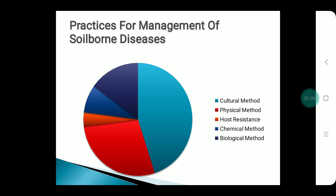The pie chart for the management practice of soil-borne disease shows that the highest proportion — 45% — is the cultural method, followed by 28% for the physical method. The other methods are chemical method, biological method, and host resistance.